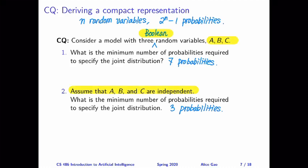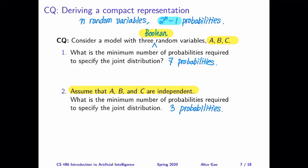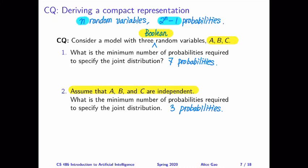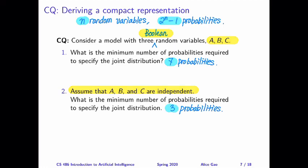The important message from this question is: when we know nothing about the random variables, we need to specify quite a few probabilities — in general, a number that is exponential in the number of random variables. However, if we know some independence relationship between these variables, we need fewer probabilities. In this case, our number decreased from 7 to 3. But if we have n random variables, the saving goes from 2 to the power of n minus 1 down to n, which can be quite a large saving.